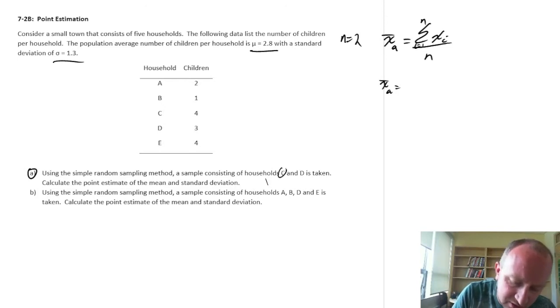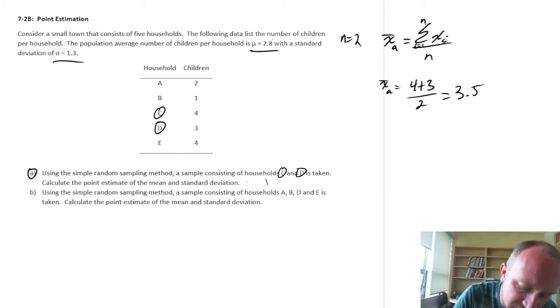So our sample here is only C and D. So I'm only going to look at these two. So this is 4 plus 3 divided by 2, so that's 7 divided by 2. This is going to be 3.5.